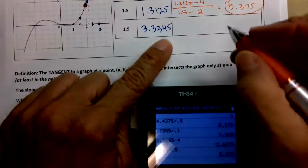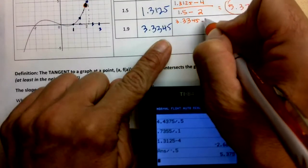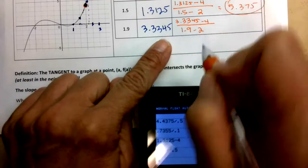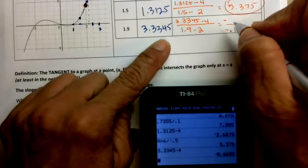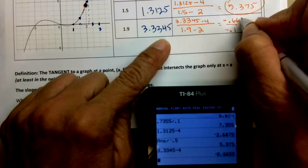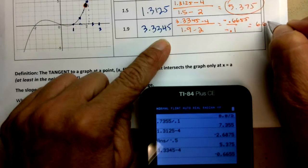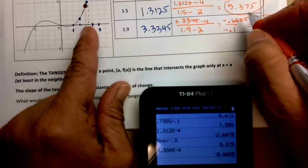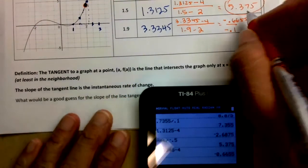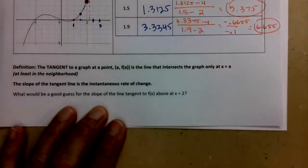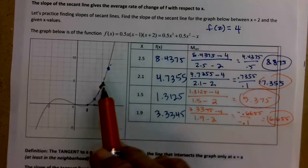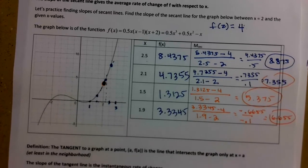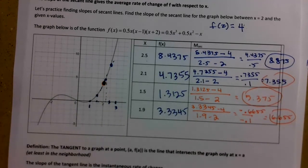And finally, 3.3345 minus 4, divided by 1.9 minus 2. So that's going to be a negative 0.1 for the denominator. 0.3345 minus 4. Negative 0.6655. So altogether, I've got positive 6.655 for the slope, right, as we get closer in from the left-hand side. Those are the average rates of change for my function over a given interval of x values, between two and arbitrarily other x values that I just chose. Notice I did say kind of in the vicinity of 2. So that's something to keep in mind.